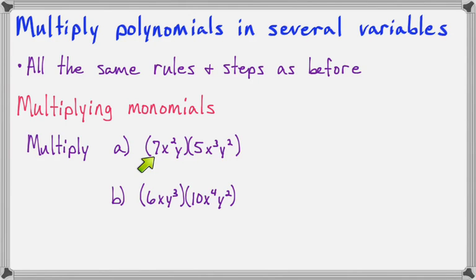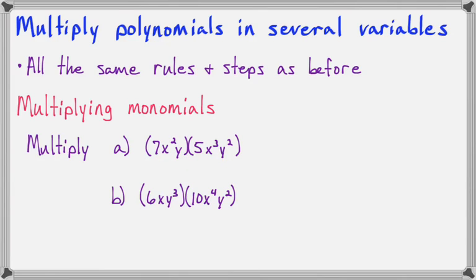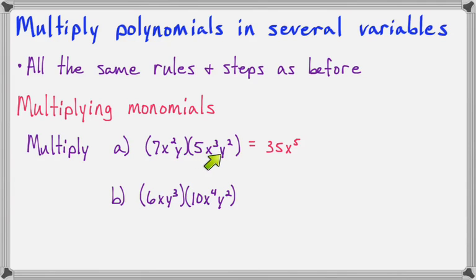Here I have 7x squared y times 5x to the third y to the second. Since this is multiplication, all I have to do is multiply the coefficients. 7 times 5 is 35. Then multiply the x's: x squared times x to the third means we add the exponents together and that will be x to the fifth. Then y times y to the second is y to the third.